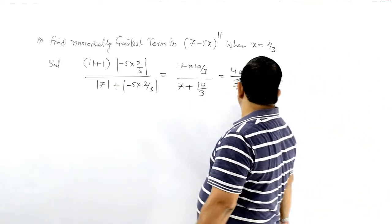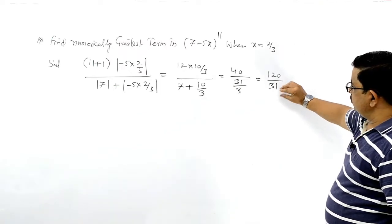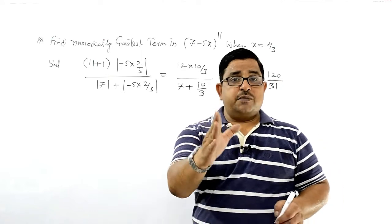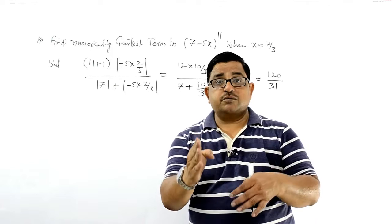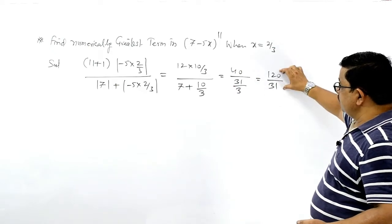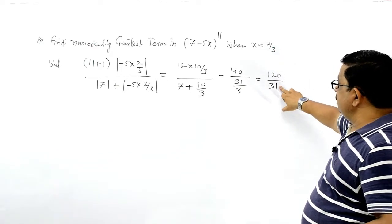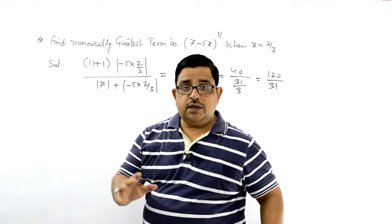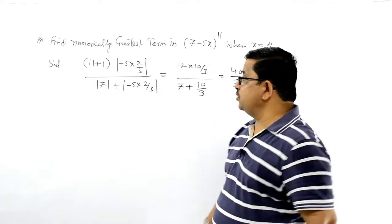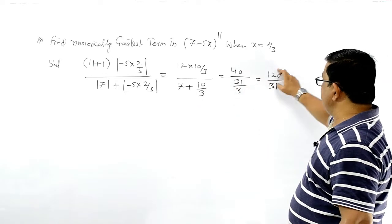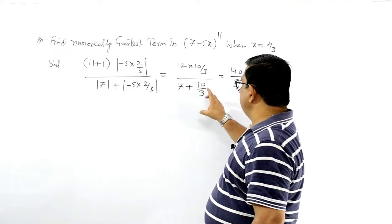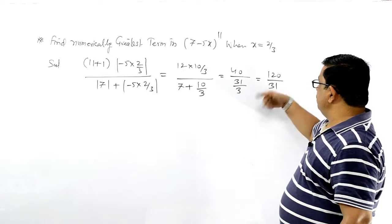अब यह value just exactly integer नहीं है। अगर नीचे 30 होता तो 4 times divide करता, लेकिन denominator 31 है जो 30 से बड़ा है, तो value 4 से छोटी है। यह 120/31 है, और नीचे की value 21+10 = 31 बराबर है — so it is less than 4.